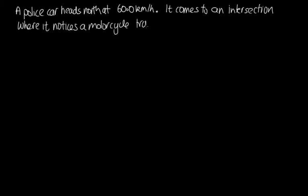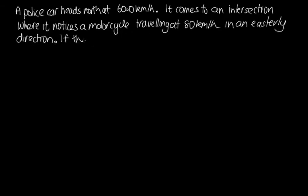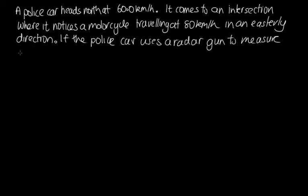So the question is, a police car heads north at 60 kilometres per hour. It comes to an intersection where it notices a motorcycle travelling at 80 kilometres per hour in an easterly direction. If the police car uses a radar gun to measure the speed of the motorcycle, what speed will it measure?